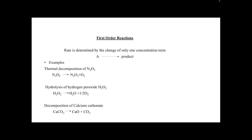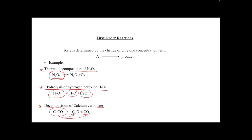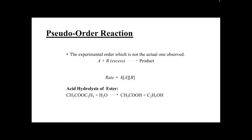First-order reactions contain only one molecule or one reactant that affects the rate. Examples include: the thermal decomposition of dinitrogen pentoxide, the hydrolysis or decomposition of hydrogen peroxide into water and oxygen, and the decomposition of calcium carbonate into calcium oxide and carbon dioxide — each requiring only one molecule of the reactant.